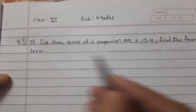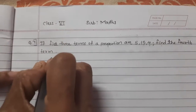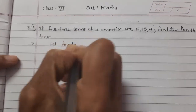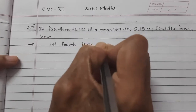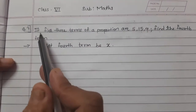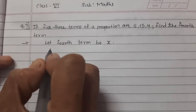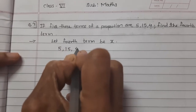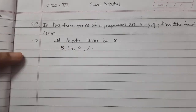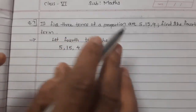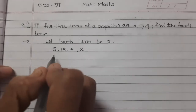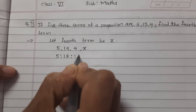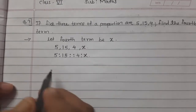So let the 4th term be x. It is given that the first 3 terms of the proportion are 5, 15, 4 and the 4th term is x. They are in proportion, so we write: 5 is to 15 proportion 4 is to x.